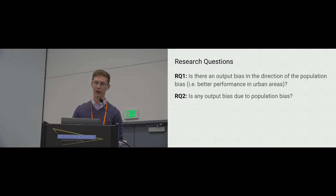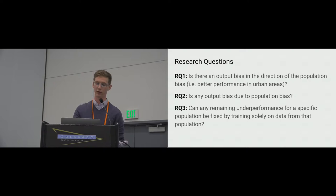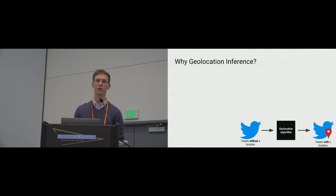But say that doesn't even work and the algorithm still does not perform well for rural tweets. What if we train the algorithm purely on rural data — that is, a geolocation algorithm built specifically for rural tweets? That becomes our third and final research question: to what degree can we fix output bias through the rebalancing of training data alone? And I want to take a step back and explain why we should care about the performance of geolocation algorithms in urban and rural areas, beyond just studying the relationship between population bias and output bias.